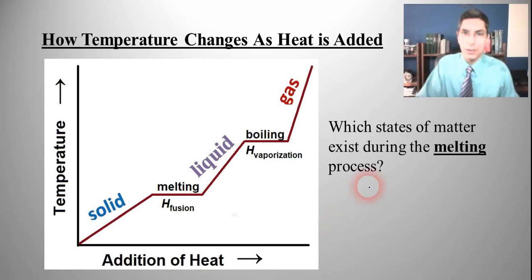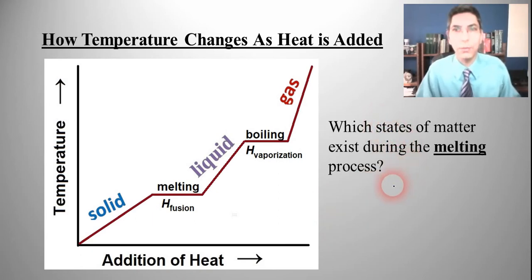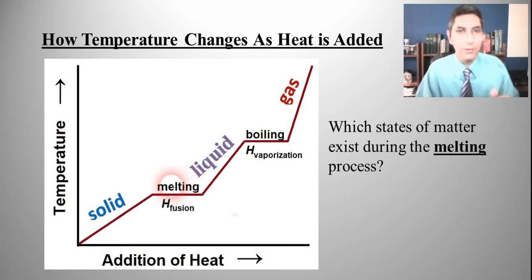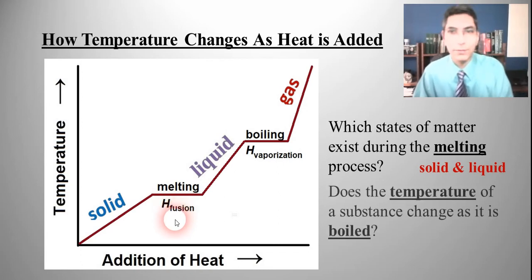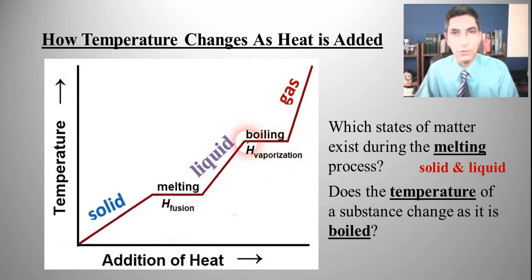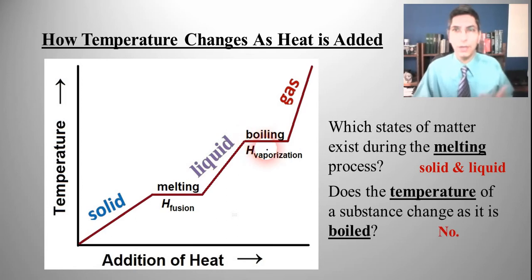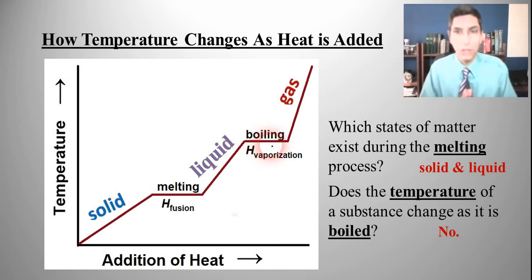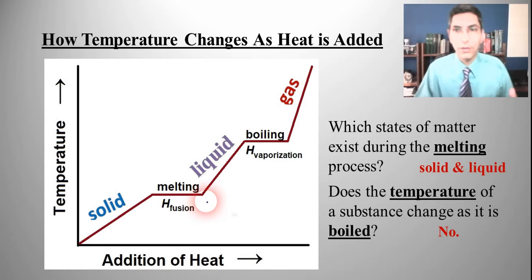Now let's answer a few questions about what we see here. Which states of matter exist during the melting process? As a substance is melting we're going to have a mixture of solid and liquid. Does the temperature of a substance change as it is boiled? During the boiling process the temperature is not changing. The temperature of a substance does not change as it's being boiled or melted, or going the other direction — condensed or frozen. During a phase change, temperature should be constant.